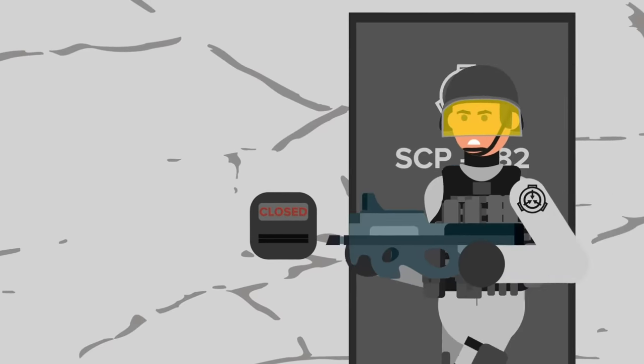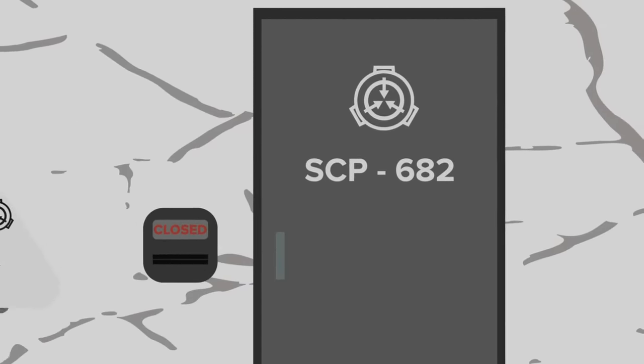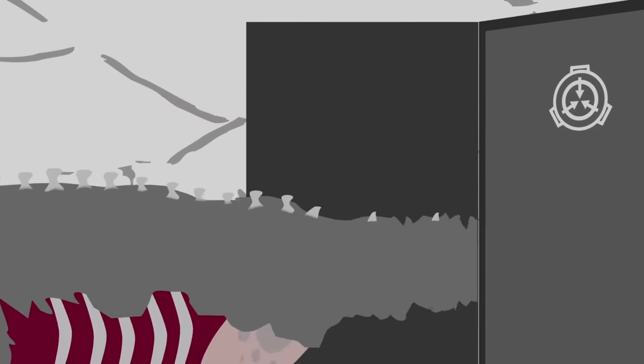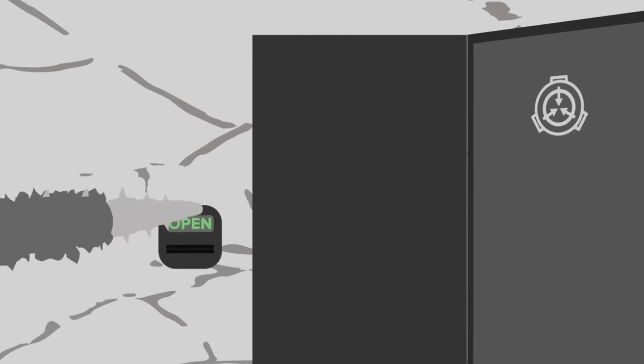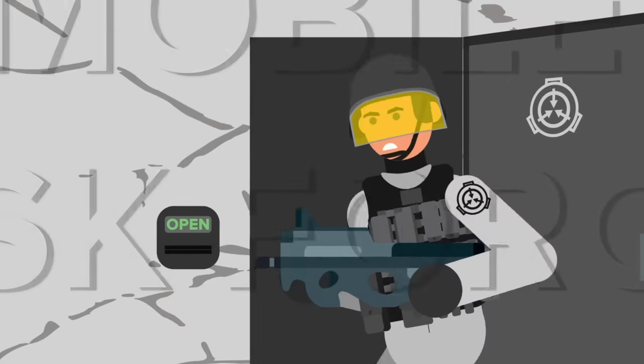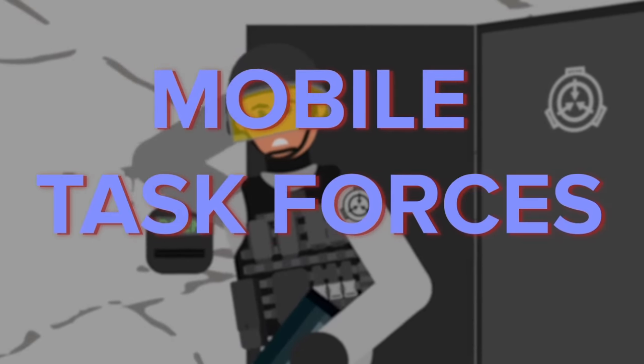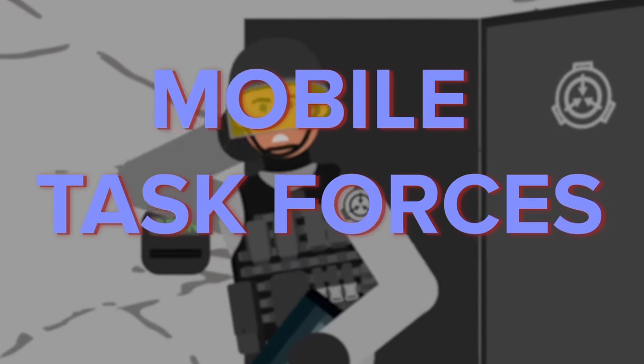In the SCP system, uncontained anomalies are considered especially heinous. At the SCP Foundation, the dedicated operatives who investigate and neutralize these deadly aberrations are members of elite specialized squads known as Mobile Task Forces. These are their stories. Dun dun!